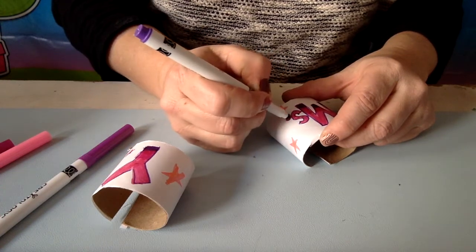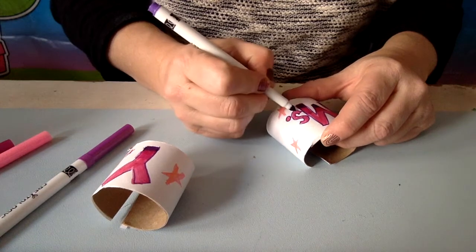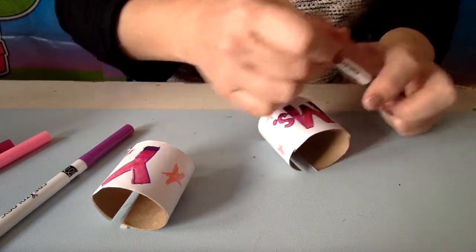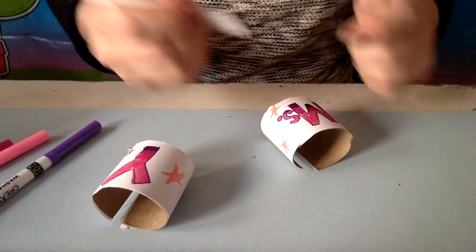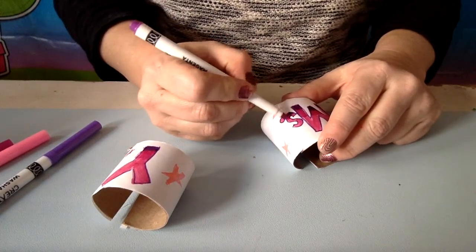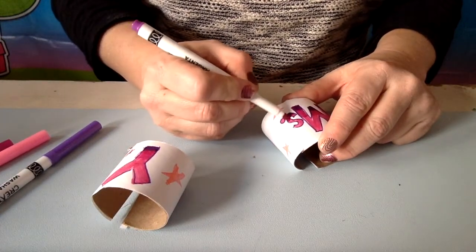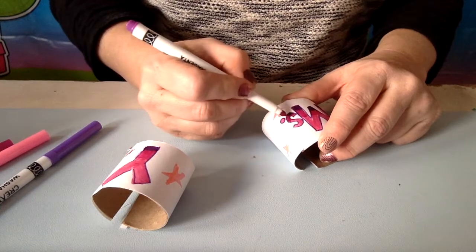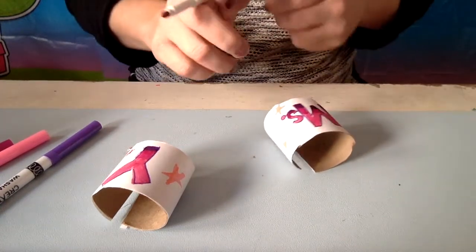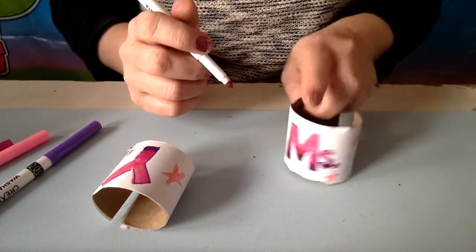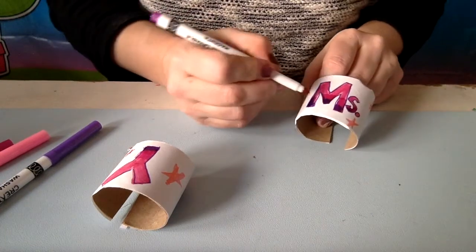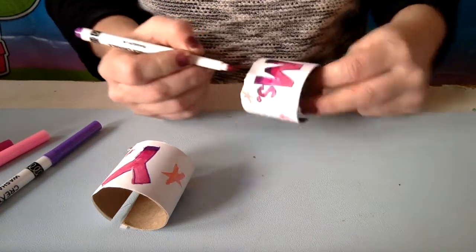I like using markers because they're bold and we don't have to worry about the ink going through to the other side. But if you like things, you're designed to look more soft or delicate, you could use colored pencils or you could use crayons too. Anything that you have at your home. It's looking good so far, I'm really happy with the way the colors are coming out.